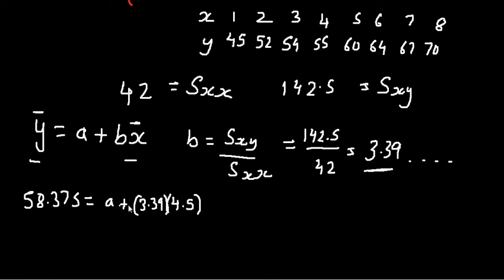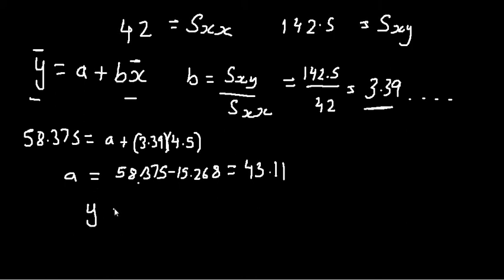So if we go to figure out a, we know our mean of x, that times our b coefficient, which is our gradient. And then on the other side, you have this, the mean of y. So to get a, we basically have to do minus 58.375. So I take away this answer from 58.375 and I get 43.11. So my equation for that straight line is y is equal to 3.39x plus 43.11.